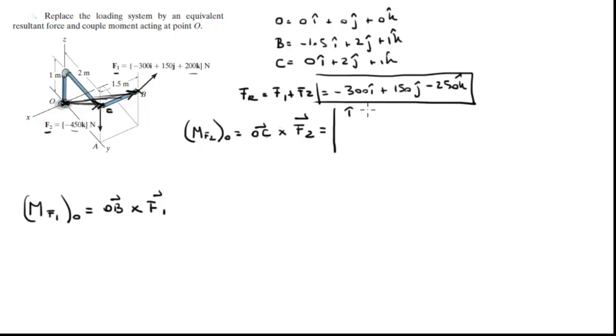This is i, this is j, this is k. On the second row we got OC which is equal to C which is 0, 2, 1, and here we got F2 which is 0, 0, minus 450.